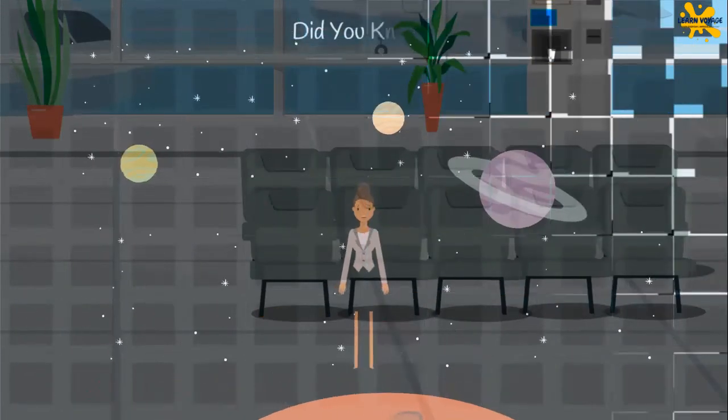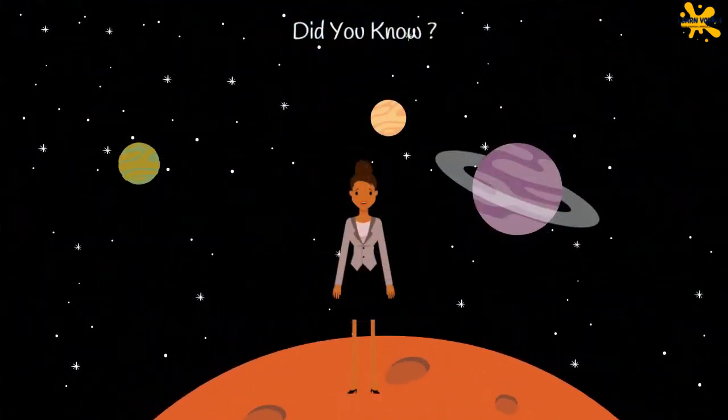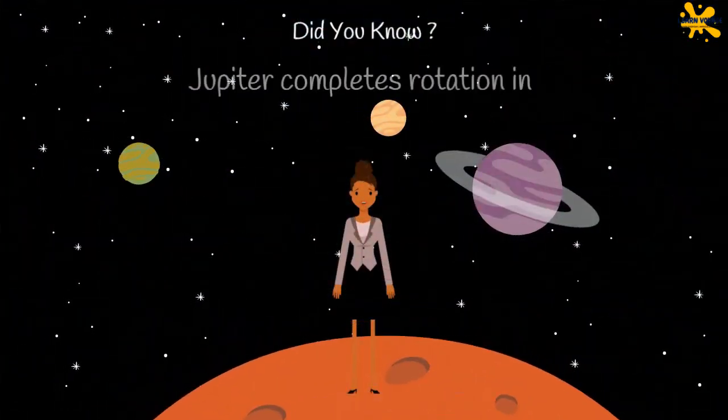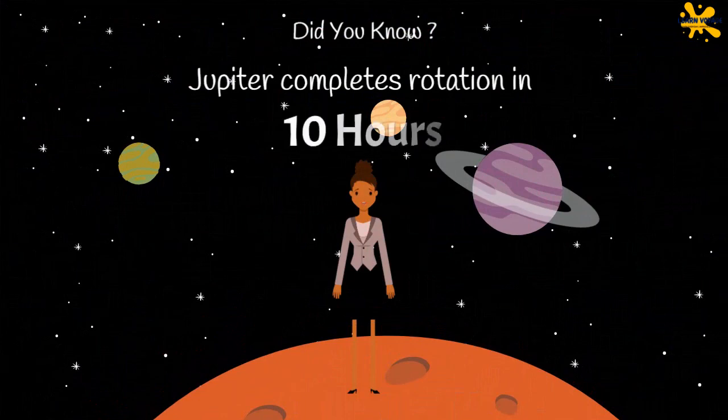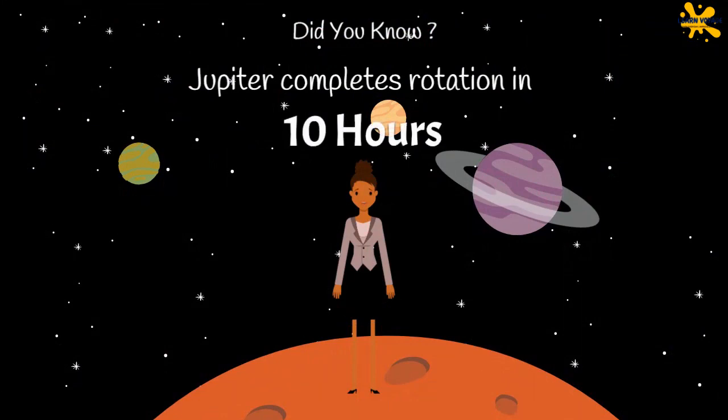Did you know? The giant planet in our solar system is Jupiter, and it takes 10 hours to complete one rotation.